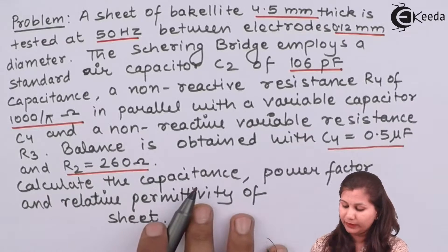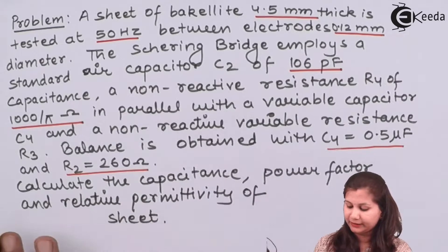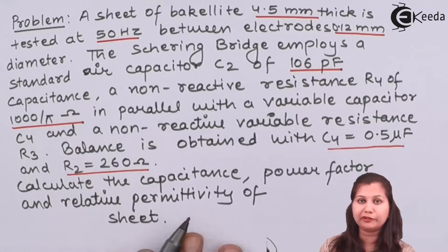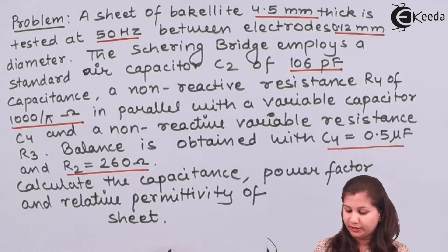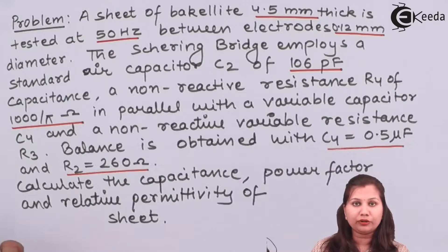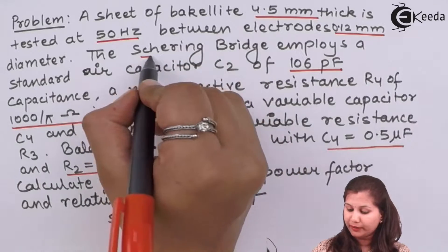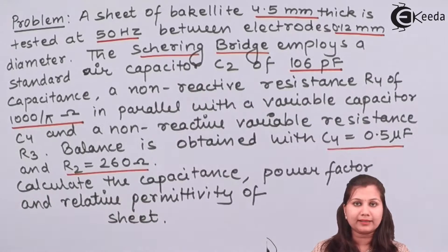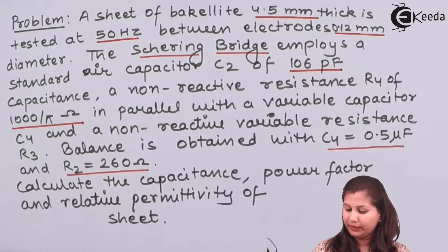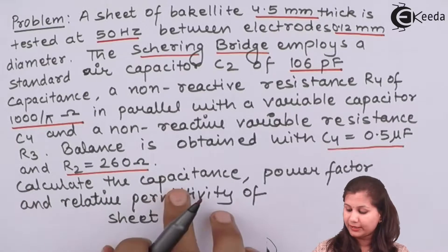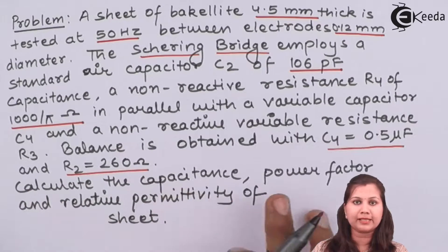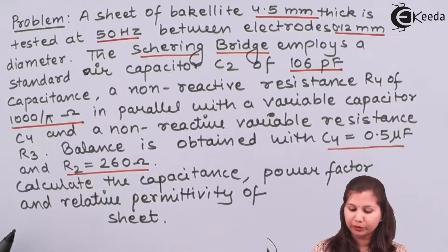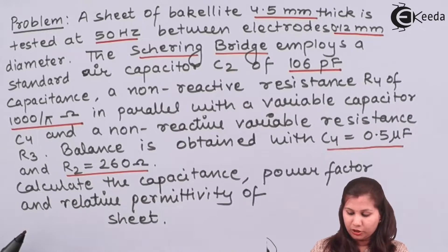We have to calculate the capacitance, power factor, and relative permittivity of the sheet. First we will draw the circuit for the Schering bridge, then derive the balance equations for it, and then calculate the unknown variables — that is, capacitance, power factor, and relative permittivity.